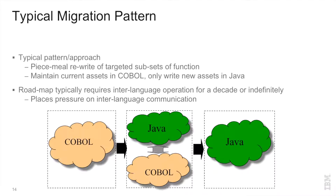The typical migration pattern that we've seen and have worked with various customers on is having a large number of COBOL assets. What we're really targeting here is to identify pieces within your COBOL application to eventually leverage the Java language, frameworks, and runtimes. Typically, these COBOL assets have been developed for quite a long while and are fairly substantial, so we want to select pieces of it that make sense.